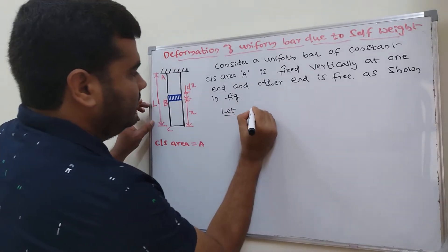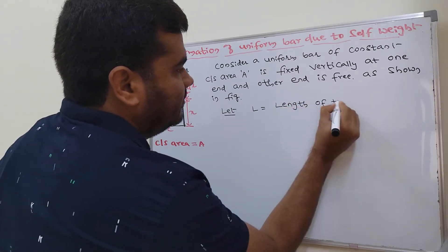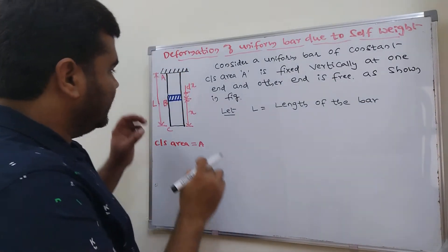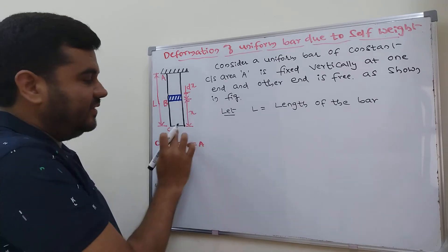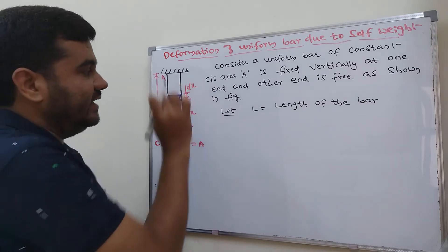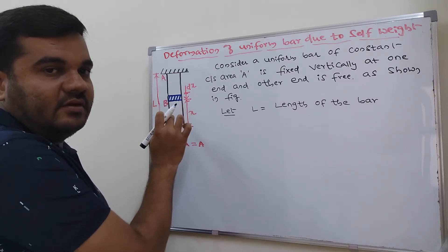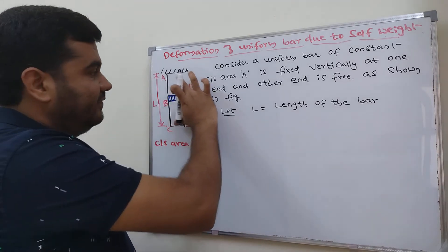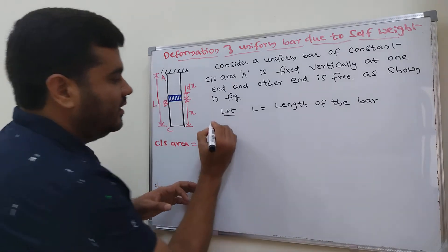Let L equal the length of the bar. We will consider a small elemental strip at a distance x from the free end. The length of this strip is dx. We need to first derive the deformation of this element, then integrate from 0 to L to get the deformation of the whole bar.